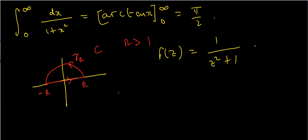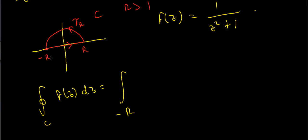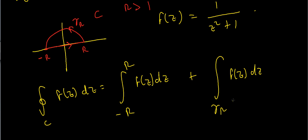By construction, the contour integral over c of f(z) dz equals the integral along the real axis from minus r to r of f(z) dz, plus the integral over the arc gamma sub r of f(z) dz. The contour is made up of two pieces: a line segment from minus r to r, and then an arc from r back to minus r. Summing these integrals gives the full contour integral on the left.